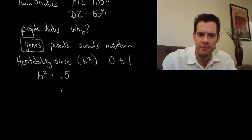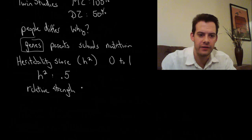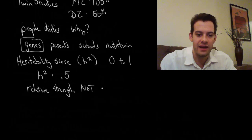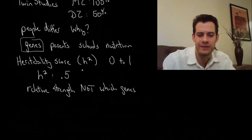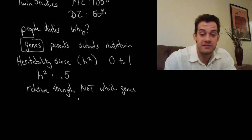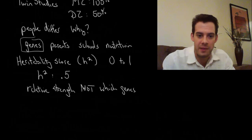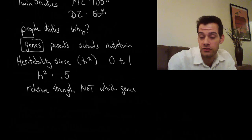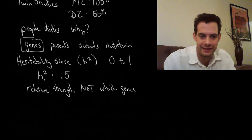Okay, so some things to keep in mind about this. The first thing is that the heritability score only tells us the relative strength. It tells us that genes are about half of the explanation of why people differ. But it doesn't tell us which genes and it doesn't tell us which aspects of the environment. So when we say heritability is 0.5, that's not telling us which genes are responsible, whether it's one gene or a thousand genes. Similarly it doesn't tell us do parents matter more than schools, do schools matter more than nutrition, what are the important environmental aspects. We can't get that from the heritability score.